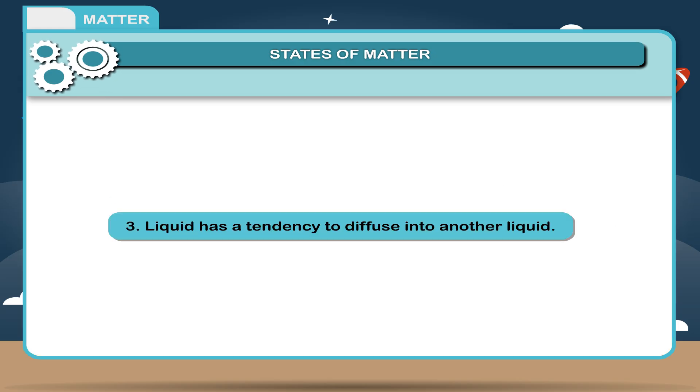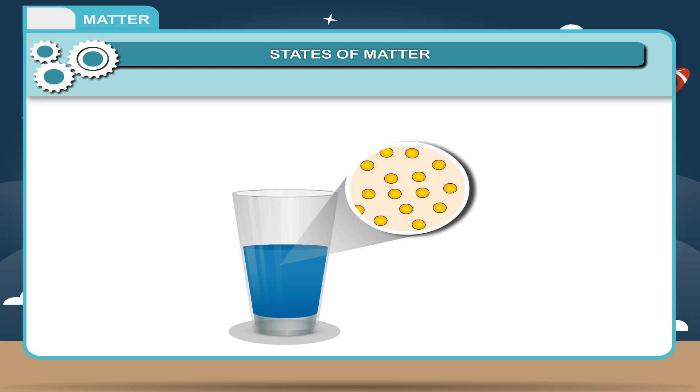3. Liquids have a tendency to diffuse into another liquid. Reason: In liquids, molecules are loosely packed and their molecules are in motion, so they have a tendency to diffuse into another liquid.